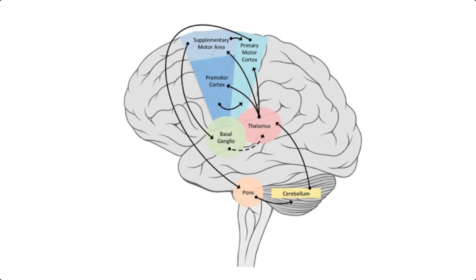Numerous brain regions are active and involved in creating procedural memories, including the prefrontal cortex, primary motor cortex, premotor cortex, supplementary motor area, the somatosensory cortex, the cerebellum, thalamus, and the basal ganglia.